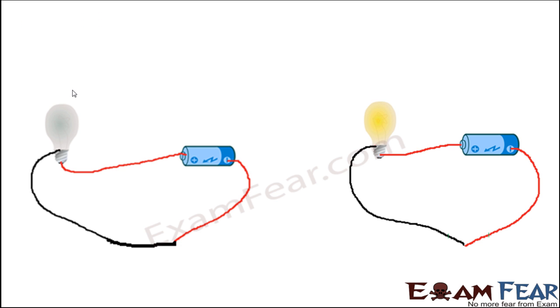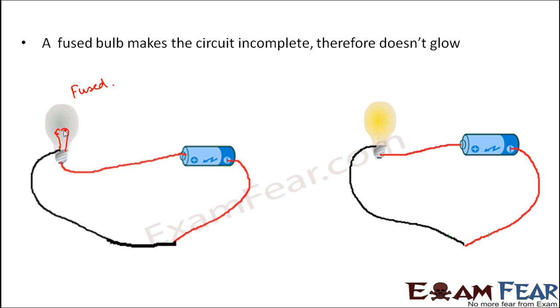So when the bulb is fused, here let's say this is a fused bulb. So since it is fused, inside how the circuit is complete, the current will flow like this. So when the current flows through this, it also needs to flow through the circuit. Now when it is broken here, the entire circuit becomes incomplete and therefore there is no current flow. And therefore the bulb doesn't glow.